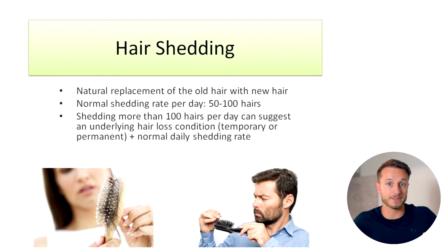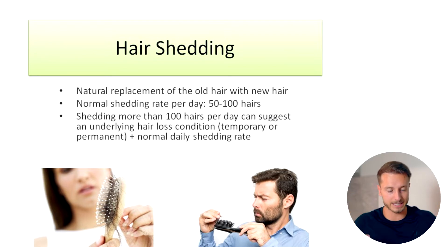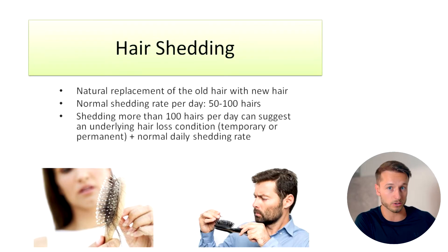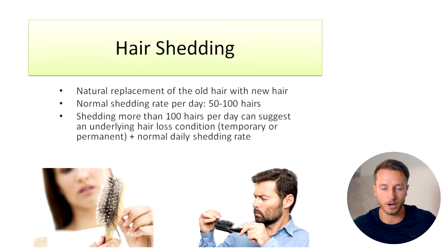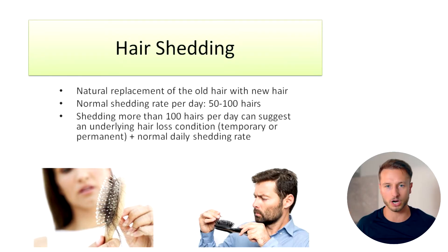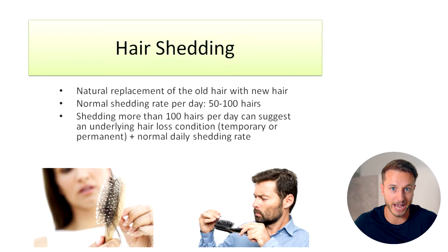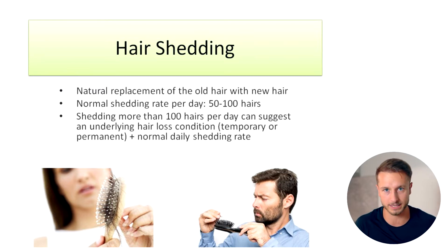However, if you experience diffuse hair loss on top of that, it means you are not only shedding those 50 to 100 hairs per day, but on top of that you are also shedding more hairs as a result of experiencing some underlying hair loss condition. So that's important to know.